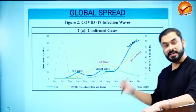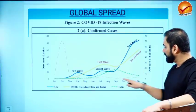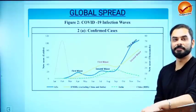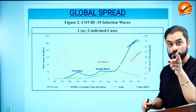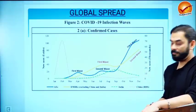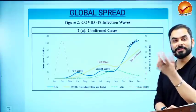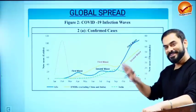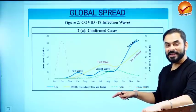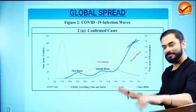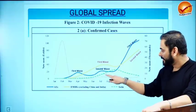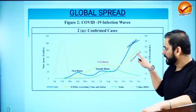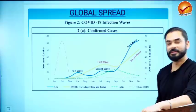Looking at India and China, they largely contained the spread despite having huge populations — India through lockdowns, China through its own measures. Emerging market economies are facing a second wave while advanced economies are facing a third wave. That's the key takeaway from this graph.